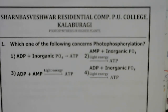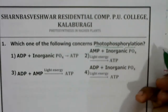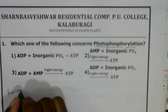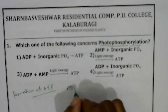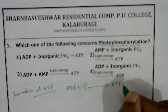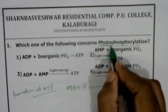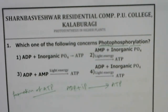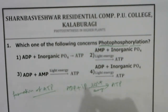Good afternoon students. Today we are discussing photosynthesis in higher plants. Moving to the first question: which one of the following concerns photophosphorylation? Phosphorylation means formation of ATP. When ADP and inorganic phosphate combine together, ATP is formed. This is called photophosphorylation — 'photo' means light. When ATP is formed using light energy, it is called photophosphorylation.